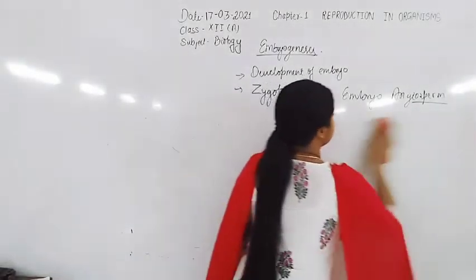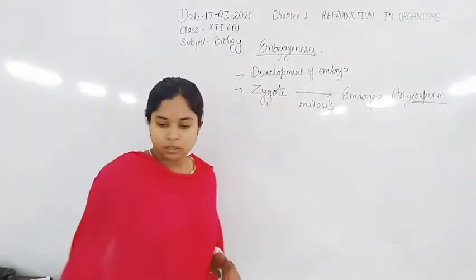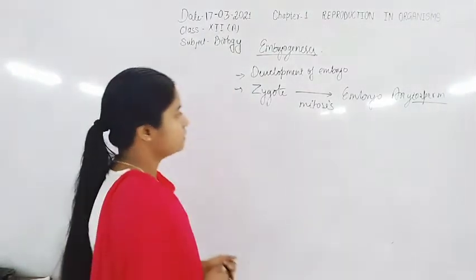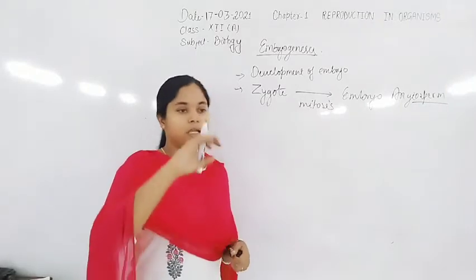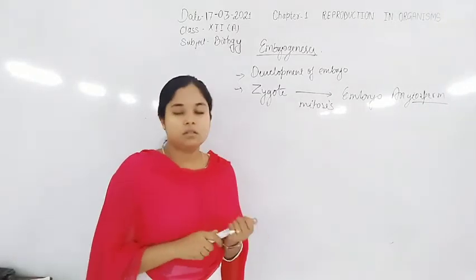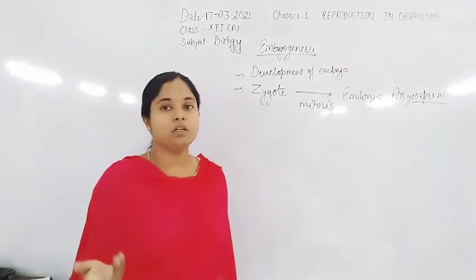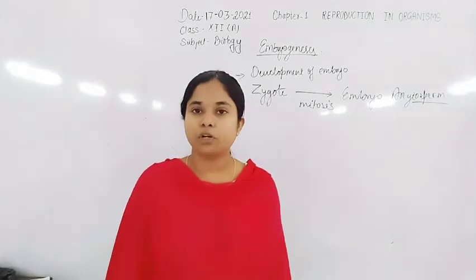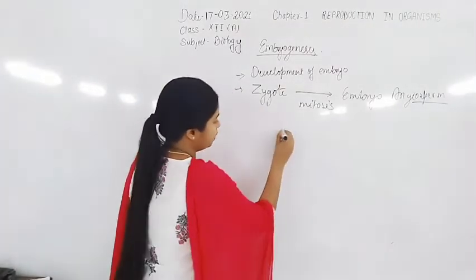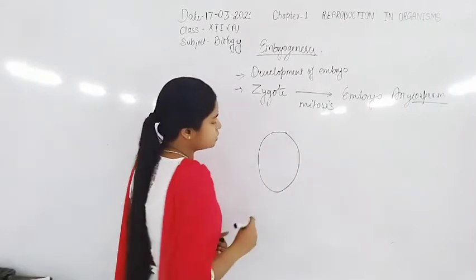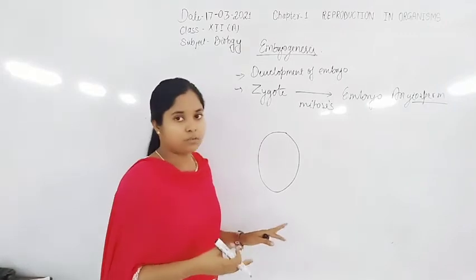Coming to the embryogenesis process — in seeded plants, the sperms are non-motile. Transfer of the sperm is done with the help of pollen grain via pollination, and also with the help of the pollen tube. The pollen tube carries the sperm inside the pistil — that is the ovary or gynoecium.